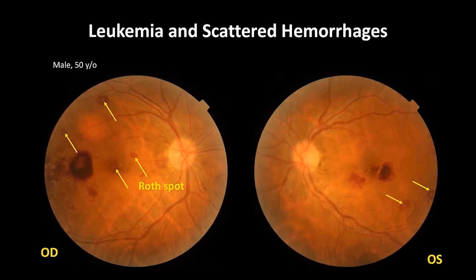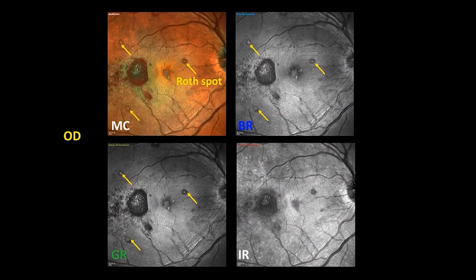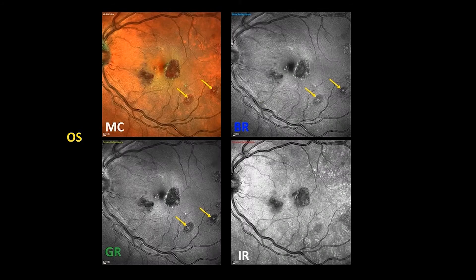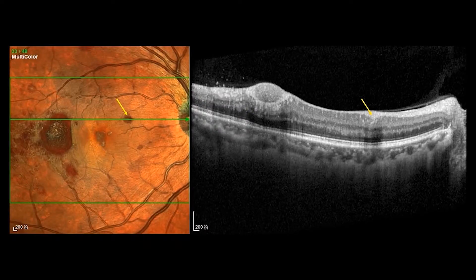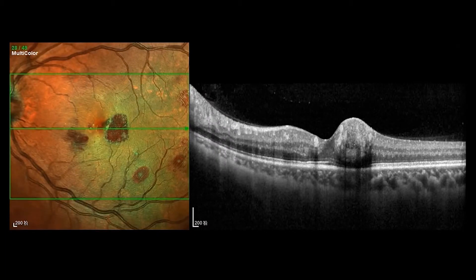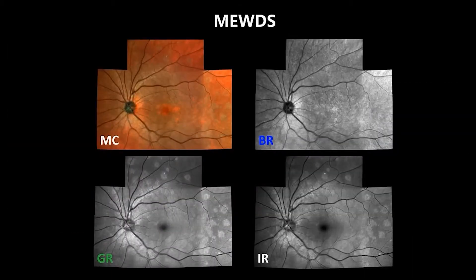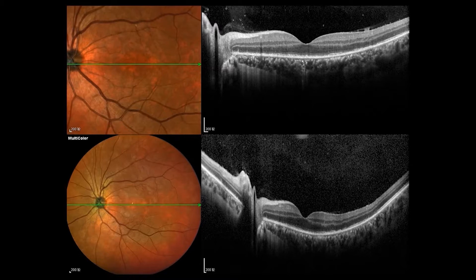This patient had leukemia. We saw scattered hemorrhages on his fundus with Roth spots on color fundus photo. Scattered hemorrhages and Roth spots also showed clearly on multicolor, blue reflectance, and green reflectance. The Roth spot corresponds to a localized hyperreflective region in the retinal nerve fiber layer. We also see the macular hemorrhages. For MacTel patient, multicolor has its advantage to reveal those dotted lesions. Combining with OCT, we can see the interrupted ellipsoid zone.